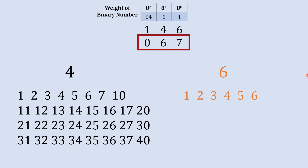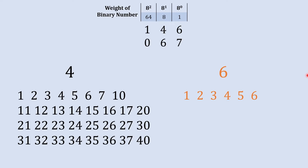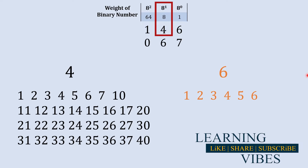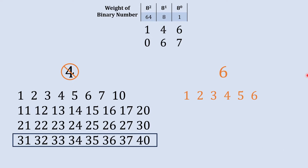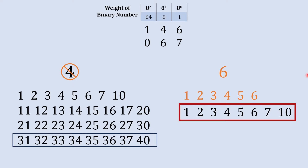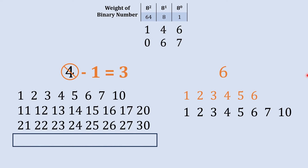Now we want to subtract 067 from 146. Starting with the ones column, 7 cannot be subtracted from 6, so we ask for one borrow from the next column — the eight's place. We have four sets of eight there, and we give one set of eight to the ones column. What's left behind is 4 minus 1, which equals 3.